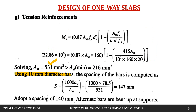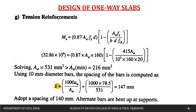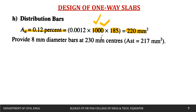Providing 10 mm diameter bars, the spacing = 1000 × (π/4 × 10²) / 531 = 1000 × 78.5 / 531 = 147 mm. Rounding down, adopt a spacing of 140 mm c/c. Alternate bars are bent up at the support, as described in the earlier video.